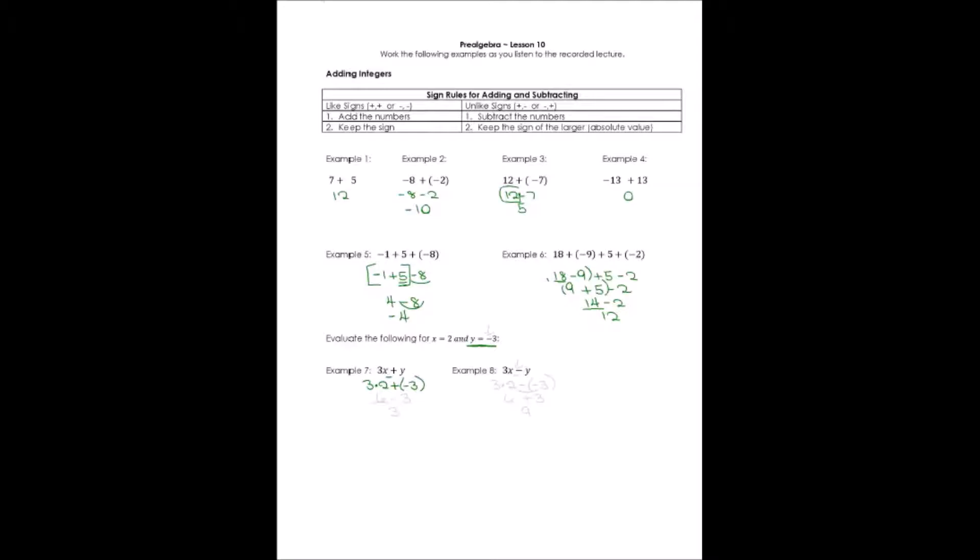Now, how do I simplify this or evaluate? First, I do multiplication. I say 3 times 2 is 6. And then I say plus a negative 3 is really the same as minus 3. And 6 minus 3, opposite signs. I would subtract and keep the sign of the larger one. It's the positive 6, so it would be a positive 3.